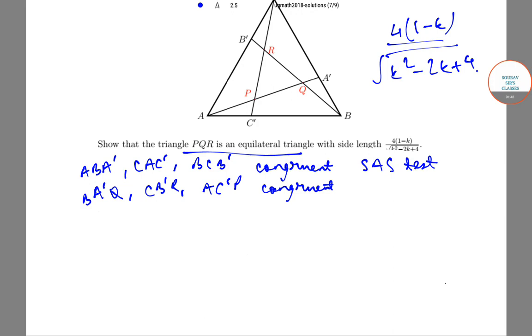By using the property of opposite angles, we get that all three angles of triangle PQR are the same. Hence, it is an equilateral triangle.